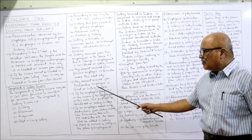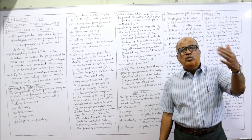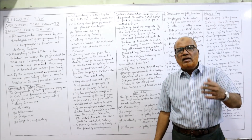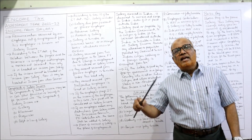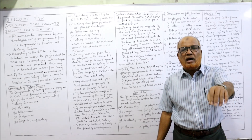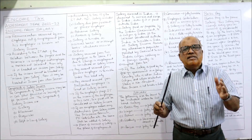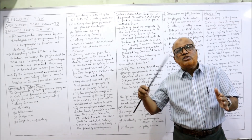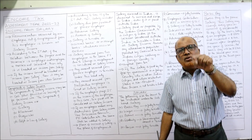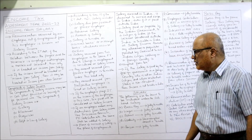Any amount received from a prospective employer — meaning a future employer — is also taxable. For example, there is an agreement between the employer and the employee: the employer says 'you have to join next year, but I am paying the salary from now, this year onwards.' So the employee is getting salary from the prospective or future employer, and that amount received is also taxable under the head income from salary.